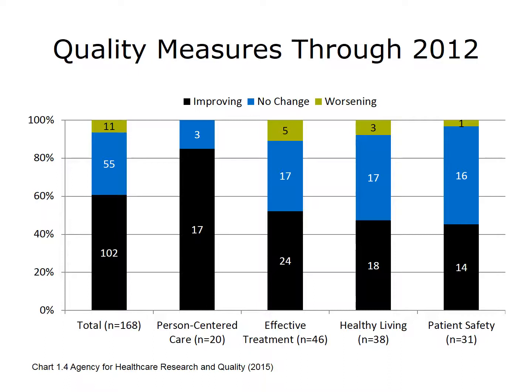The impact of the National Quality Strategy is monitored by data in the National Health Care Quality and Disparities Report. The 2014 report documents some success with regard to NQS priorities, though areas for improvement remain. Among a total of 168 quality measures tracked between 2001–2002 and 2012, 102 measures—about 60%—are improving, 55 show no change, and 11 are getting worse.